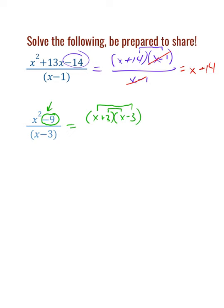If it's x squared minus 4, x squared minus 9, x squared minus 16, x squared minus 25 would be x plus 5 times x minus 5, and so on. We still have an x minus 3 in the denominator. We had an x minus 3 in the numerator and an x minus 3 in the denominator, which left us with x plus 3 as the only term remaining.